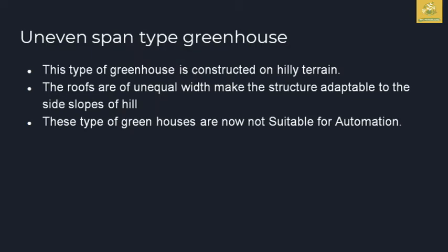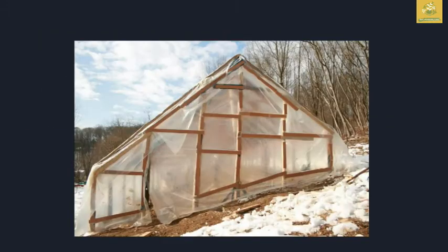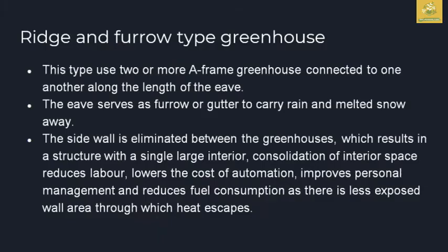The uneven span type of greenhouse is constructed on hilly terrain based on unequal surfaces. The roofs are unequal in width and are adapted for the side slopes of hills. These types of greenhouses are not suitable for automation processes.